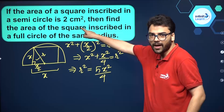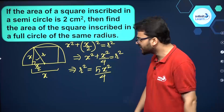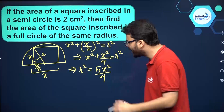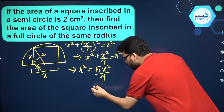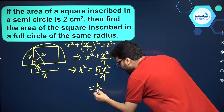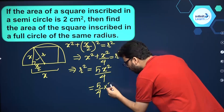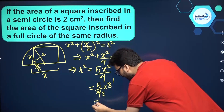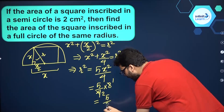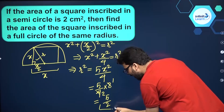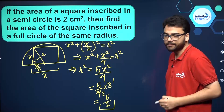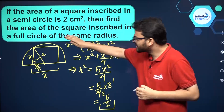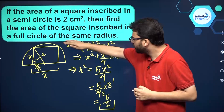It is given that the area of this square is 2 centimeter square. The area of a square is side squared, so x squared equals 2 centimeter square. Substituting 2 in place of x squared, the 4 and 2 simplify, so r squared equals 5 by 2 centimeter square.